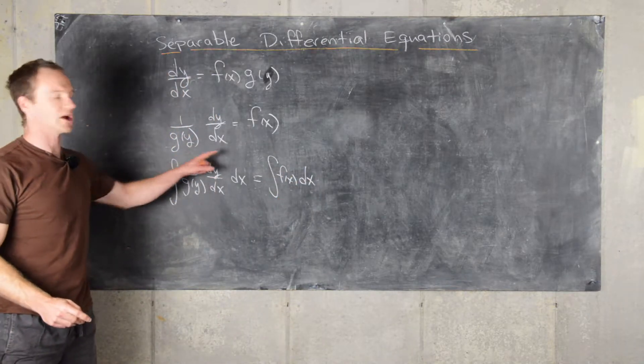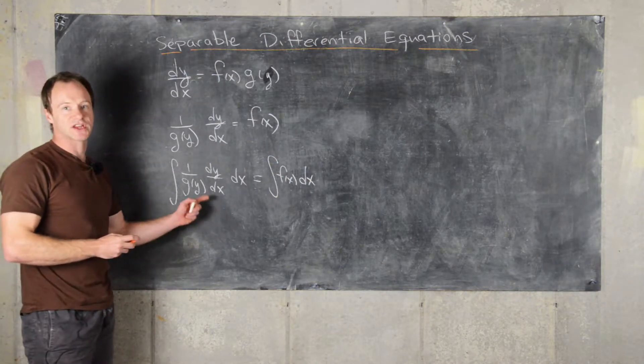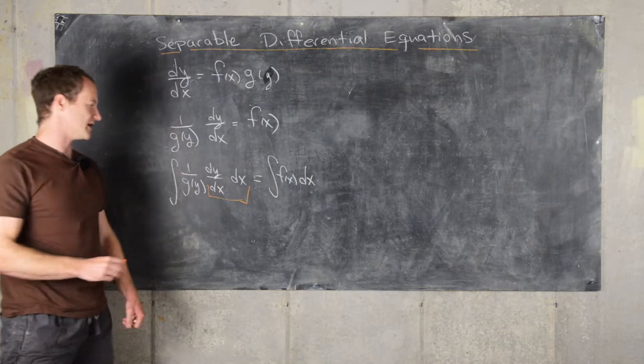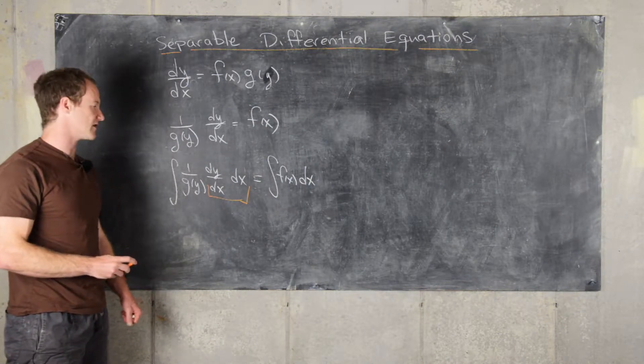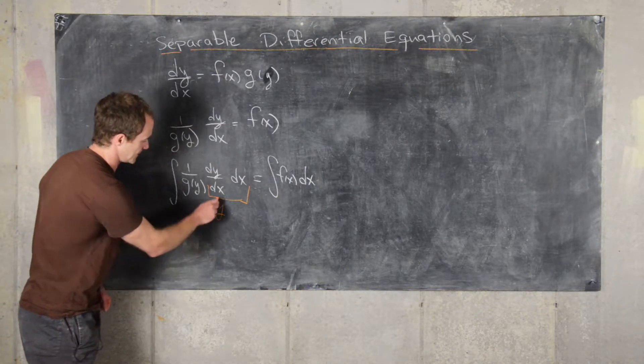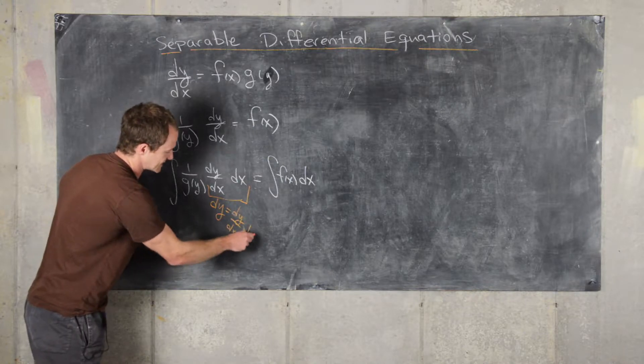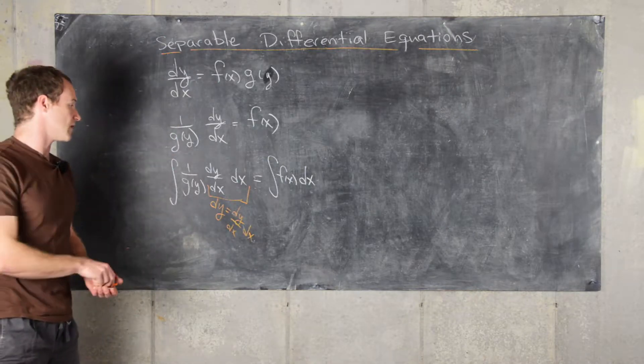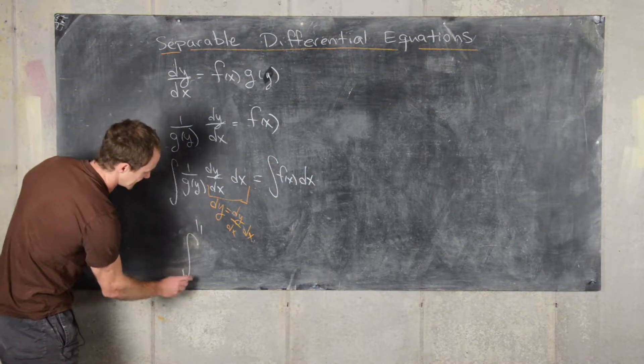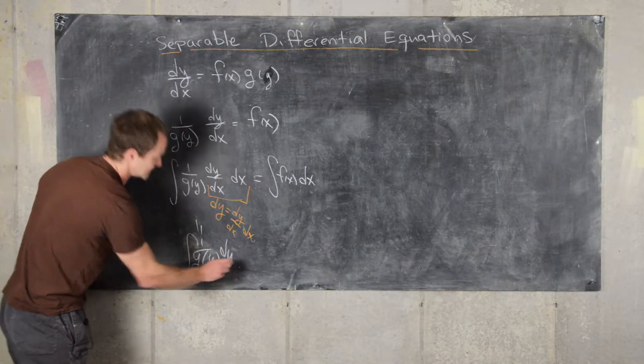But now if we look in here, and if you recall from integration calculus, this term looks like we've already done some sort of substitution of variables on an integral where we got that dy was dy/dx dx. So that allows us to write this entire left-hand side as the antiderivative of 1/g(y) dy.